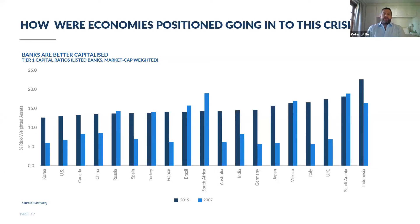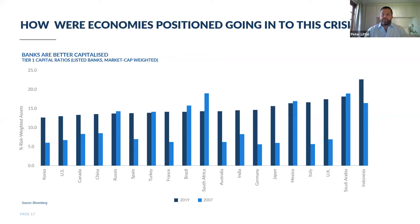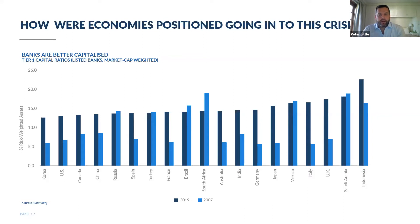Starting with banks around the world and how well capitalized they are going into this. The dark blue bars are the current average capital positions of banks around the world, and the light blue bars are what they were going into the GFC. In the GFC, banks were at the heart of the problem — not well capitalized, causing systems to seize up. This time around, banks are in significantly better shape and pretty well capitalized. Even South African banks, despite some accounting and regulatory changes, are extremely well capitalized going into this crisis — and that's a good sign.